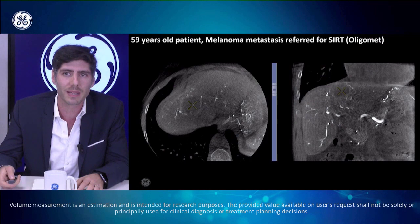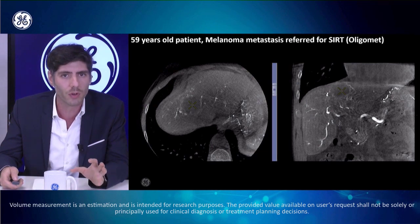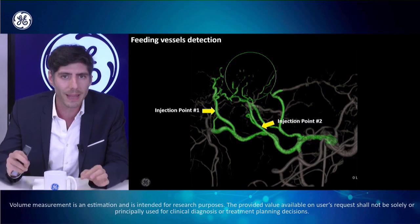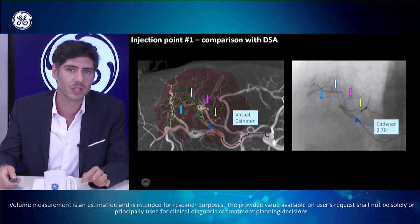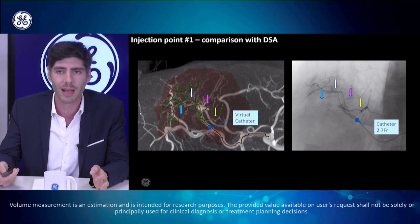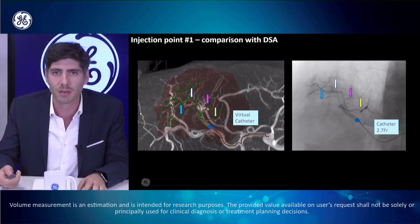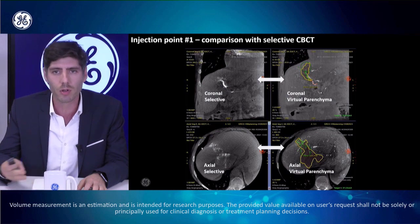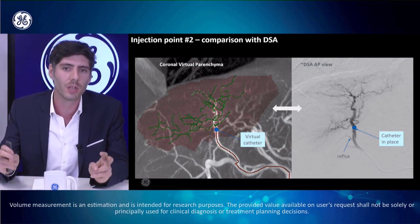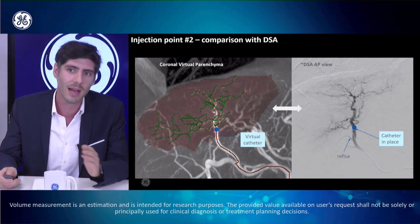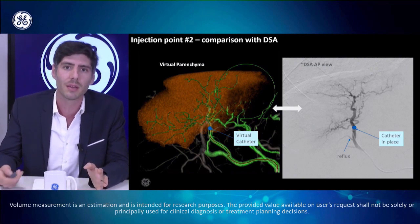Third case: a patient with an oligometastatic melanoma metastasis — a non-hypervascularized tumor, but the software still works. You place your region of interest on the tumor and the software depicts the feeders and proposes two injection points. You can clearly see the correlation between what the software proposes and the real-time 2D angiograms. With the microcatheter you have a perfect match of all branches concerned by the injection, and you also have the visualization of the parenchyma that will be affected.